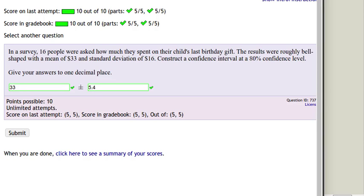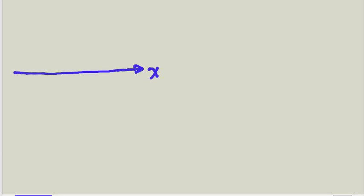We want to produce an 80% confidence level interval for this. Let's review the general idea of finding a confidence level. We've got this distribution of X, which is measuring how much was spent on the child's last birthday present. We were told that the distribution of X was essentially bell-shaped.